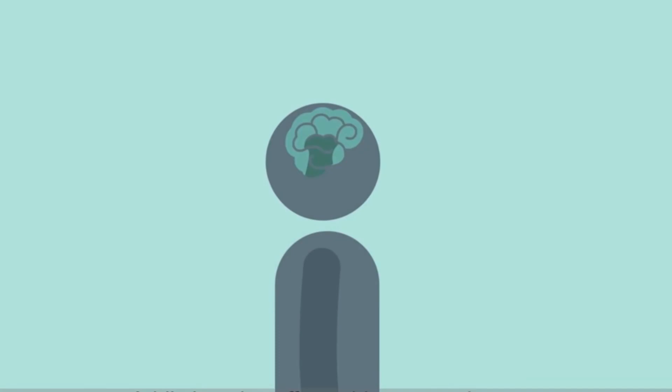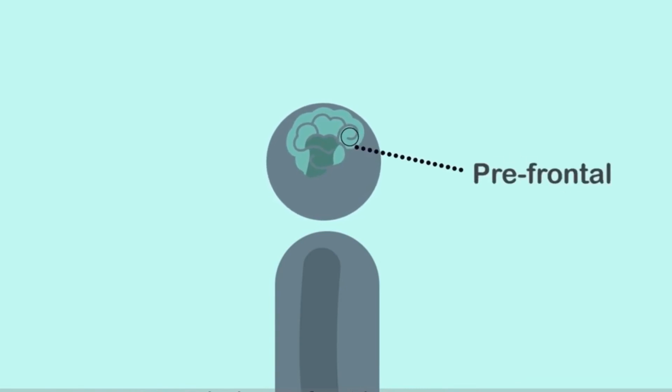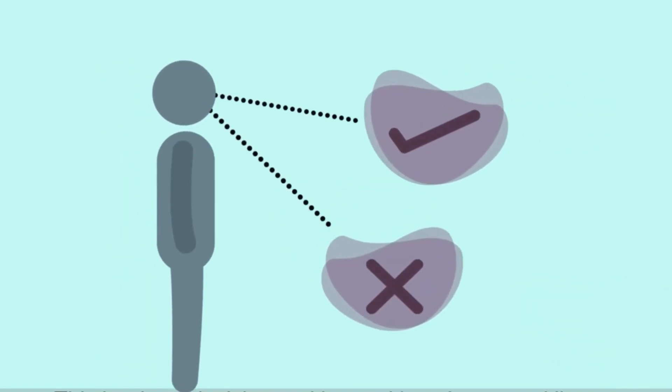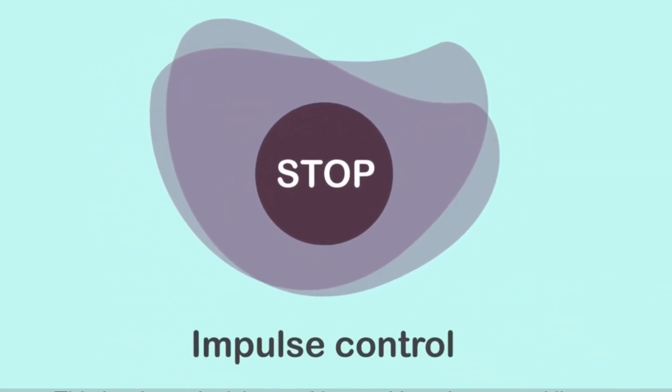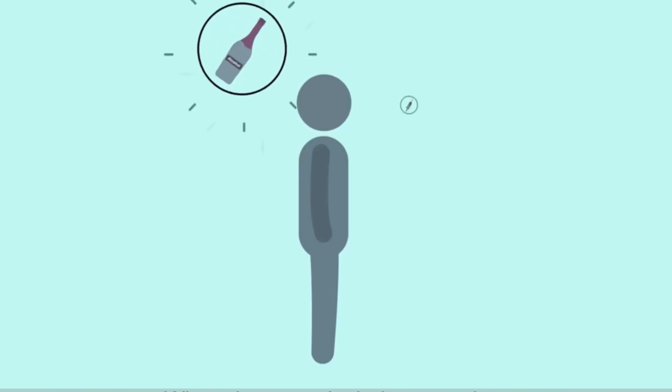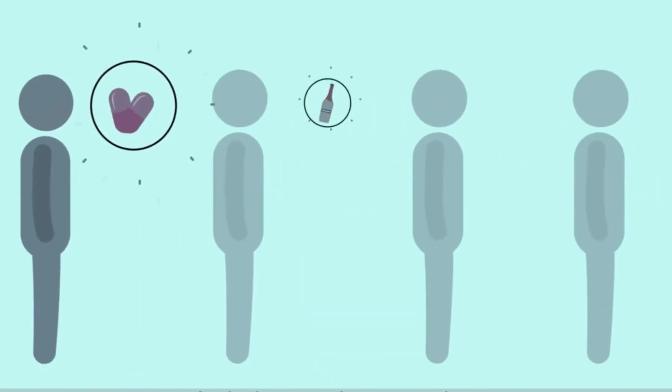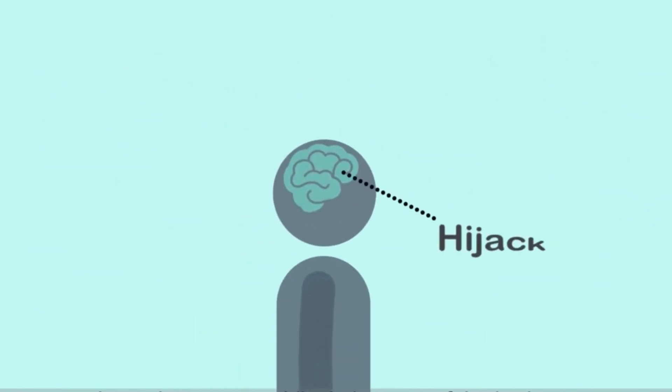Addiction also affects this area, the prefrontal cortex, which is what separates us from other animals. This is where decision-making and impulse control live. When drugs or alcohol are used, they activate the very same dopamine process in the survival center. And when use is repeated, that substance can hijack that part of the brain.